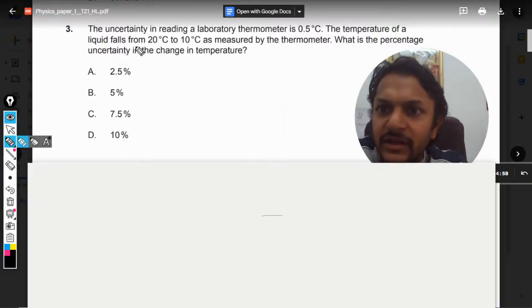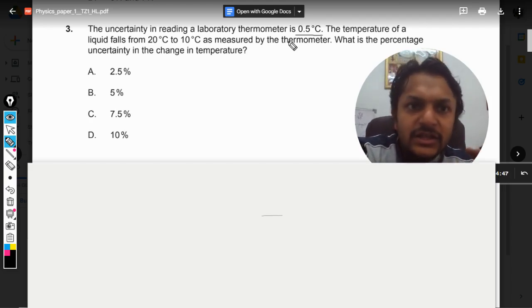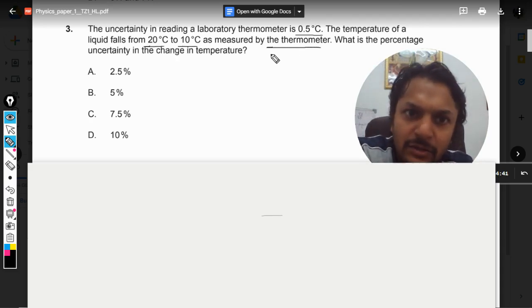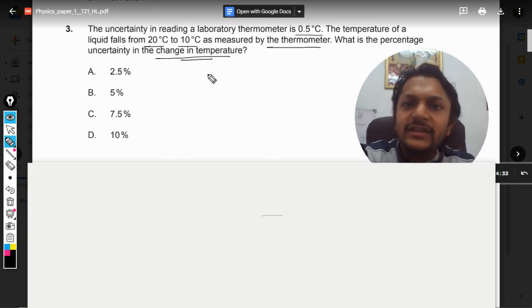Okay, what is there in this question? The uncertainty in reading a laboratory thermometer is 0.5 degrees centigrade, so this should be the absolute uncertainty. The temperature of a liquid falls from 20 to 10 as measured by the thermometer. What is the percentage uncertainty in change in the temperature? So we need to find the change in the temperature and the uncertainty. How to do this now?